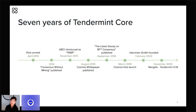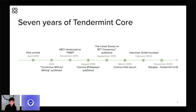Along the way, another important Tendermint white paper was published — this one by Jay Kwan, Ethan Buchman, and Zarko Milosevic. It was called "The Latest Gossip on BFT Consensus," and it presented Tendermint Core in a more formal way and helped popularize Tendermint consensus as a tool among academic researchers, especially those in distributed systems.